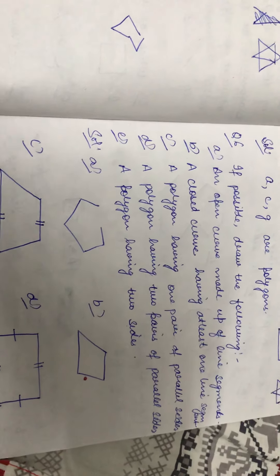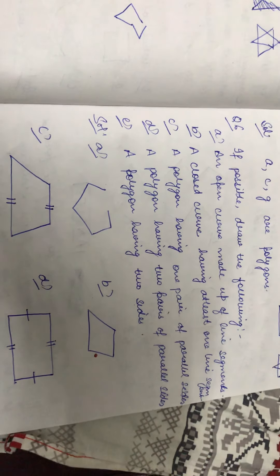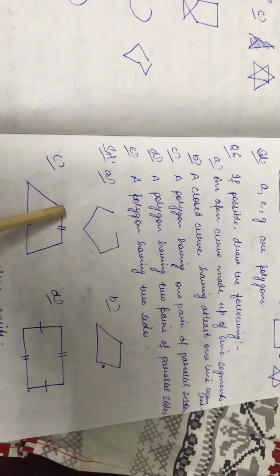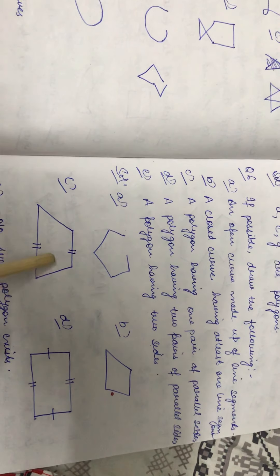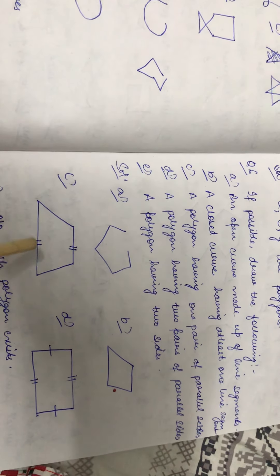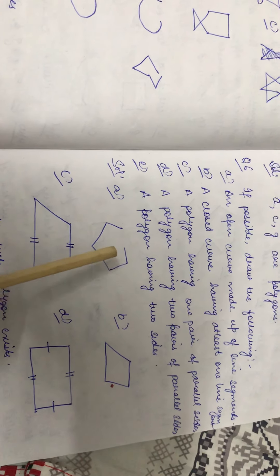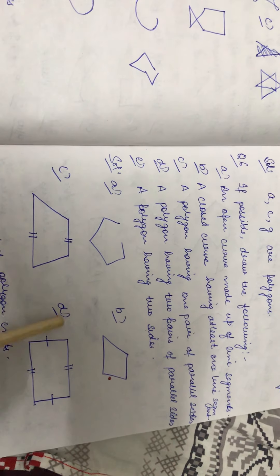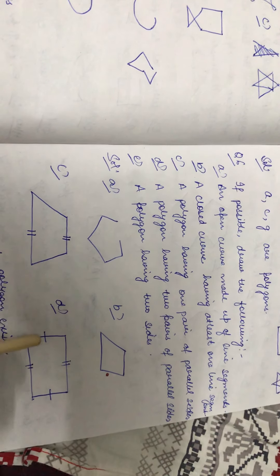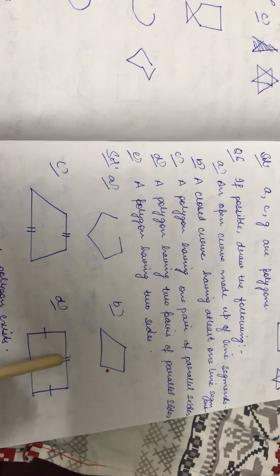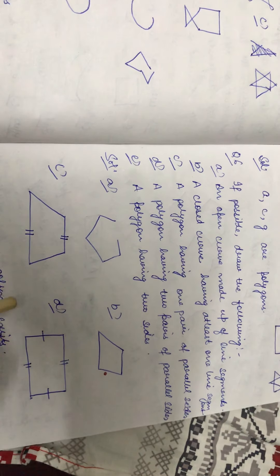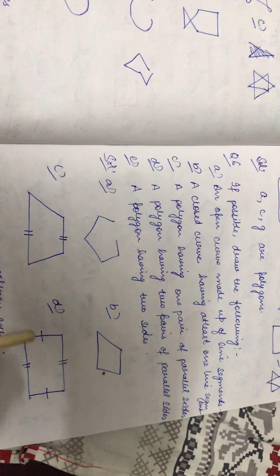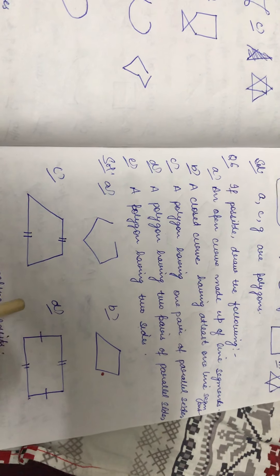C part is a polygon having one pair of parallel sides. So this is a polygon having one pair of parallel sides and the other pair is non-parallel. D part: a polygon having two pairs of parallel sides. So you can draw a rectangle or a square in which the opposite sides are parallel. So this is the answer for D part.